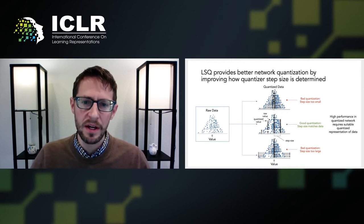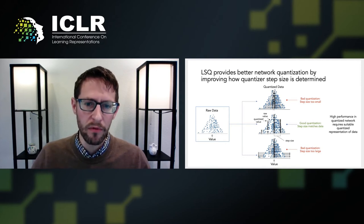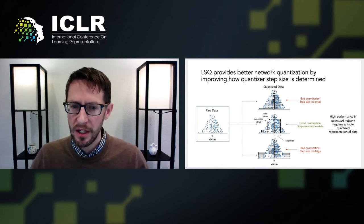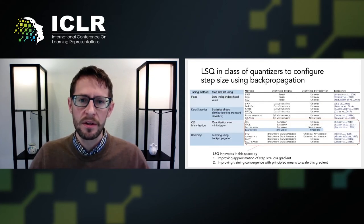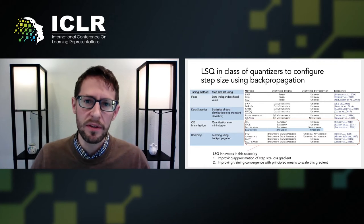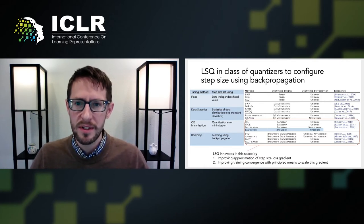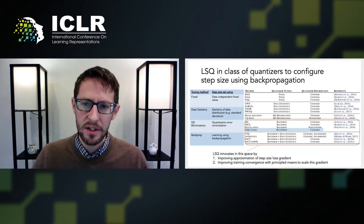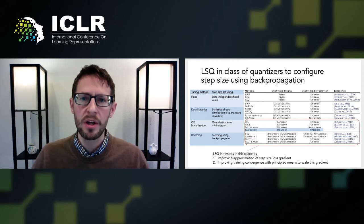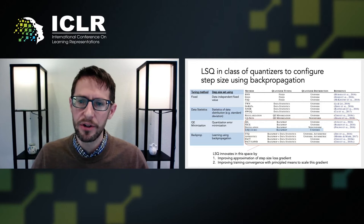Properly determining the step size is critical, as if the value is too small or too large, the resulting quantized data will provide a poor representation of the original data, in turn leading to poor application performance. A number of methods have been used for quantizing neural networks, and the means by which they determine step size can be divided into the four main categories you see here. LSQ falls into the fourth category, using backpropagation to learn the step size as a parameter during standard training.